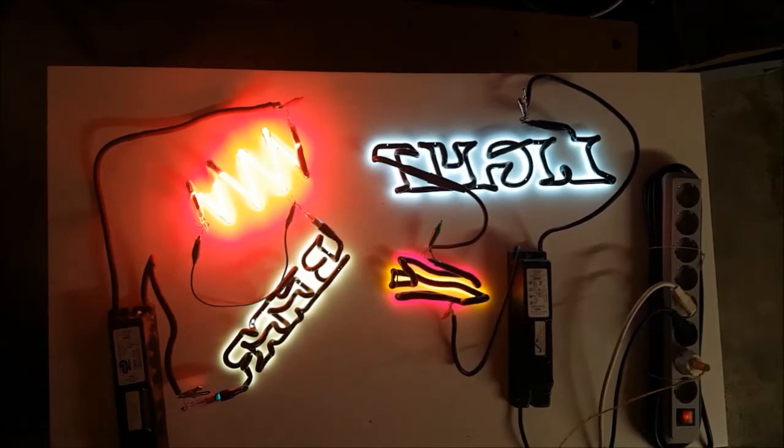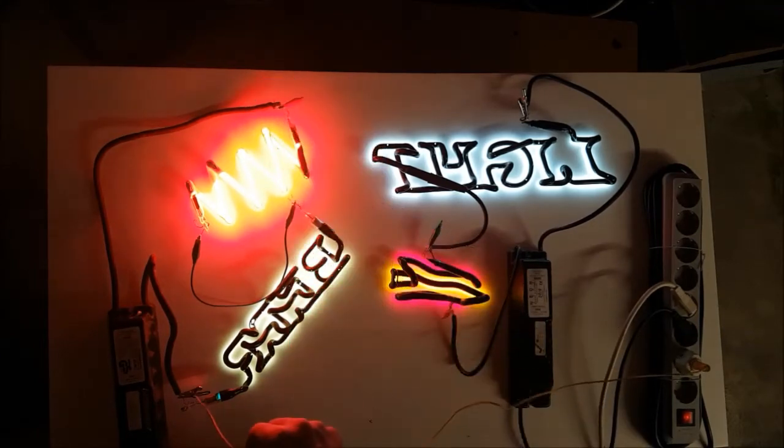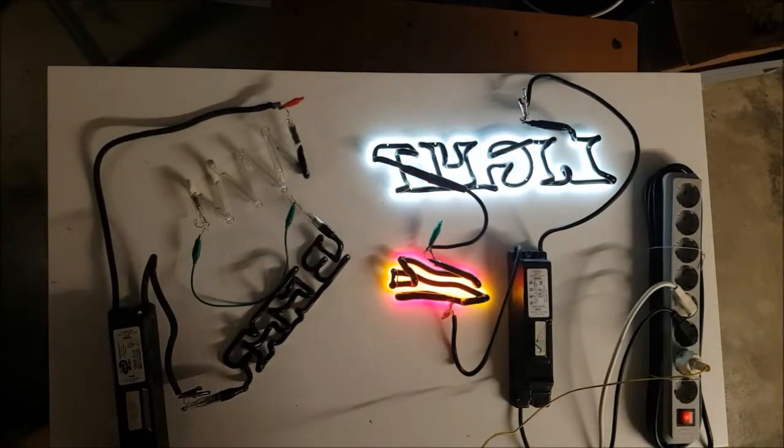Now if I do the ground fault test on the suspicious transformer, you will see that it does not shut off when I put the ground to this lead coming out of it. It does shut off when I put it to the other lead. So something's wrong on this side.